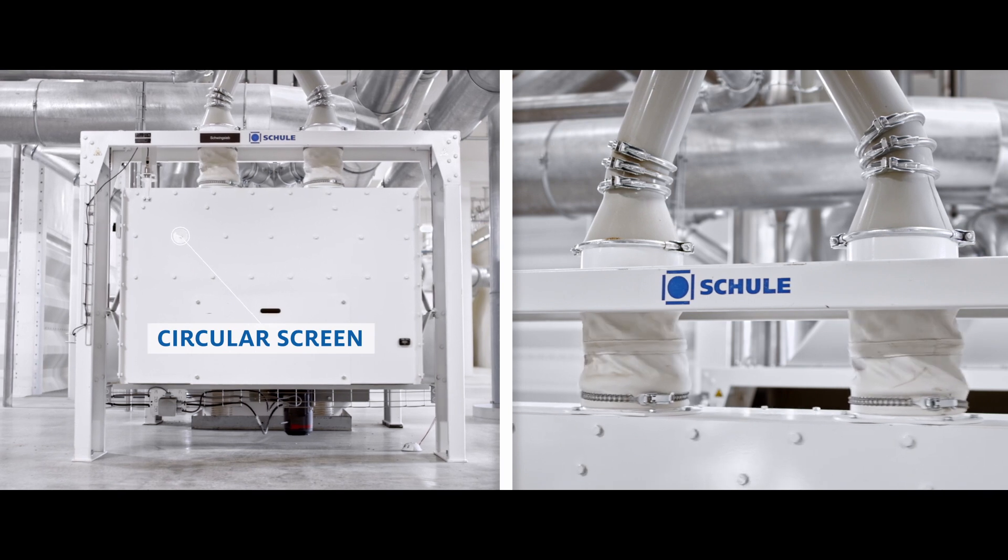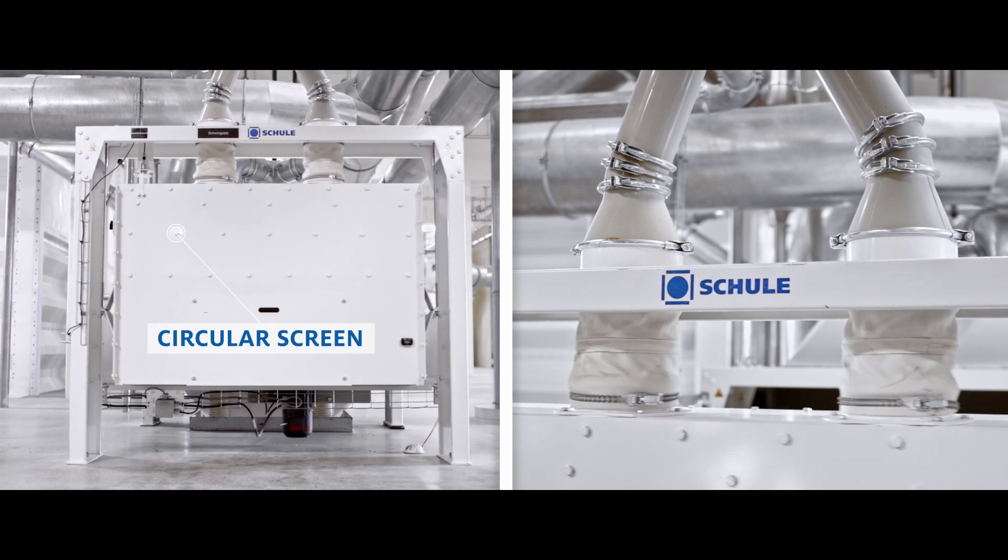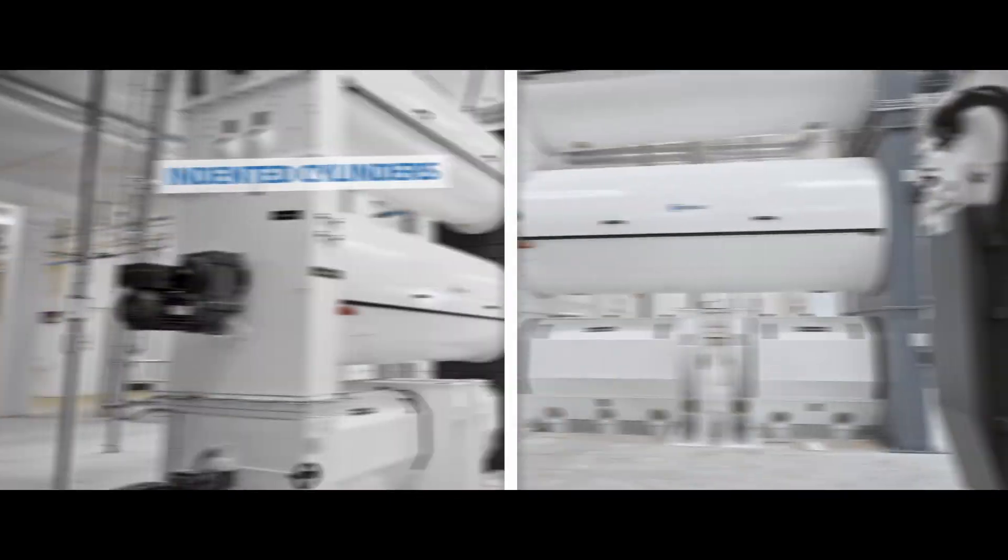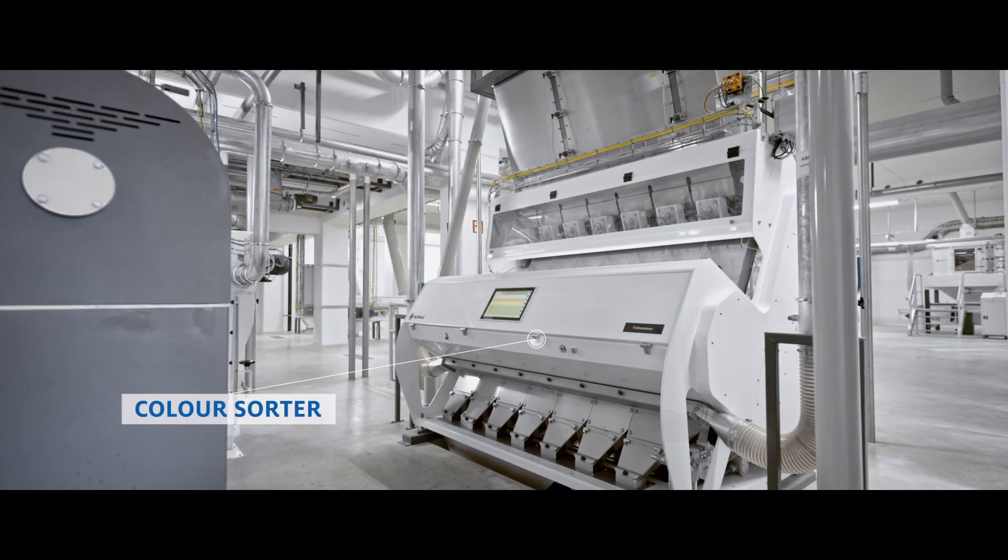To remove weeds and stones from the fresh grain, Schulle provides the full range of screening, aspiration and high-performance sorting machines, including visual inspection of the surface of each individual grain.